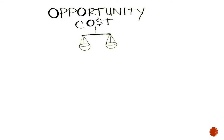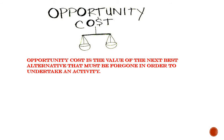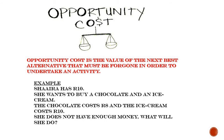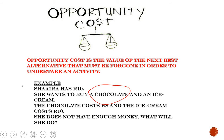We then look at opportunity cost. Opportunity cost is the value of the next best alternative that must be foregone in order to undertake an activity. For example, if Shira has 10 Rand and she wants to buy a chocolate and an ice cream — the chocolate costs 8 Rand and the ice cream costs 10 Rand — she does not have enough money to purchase both. She has to make a choice. If she chooses to purchase the chocolate, then the ice cream of 10 Rand becomes her opportunity cost because she gave it up in order to purchase the chocolate.